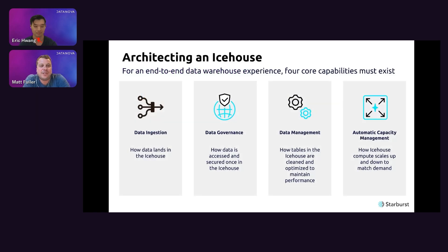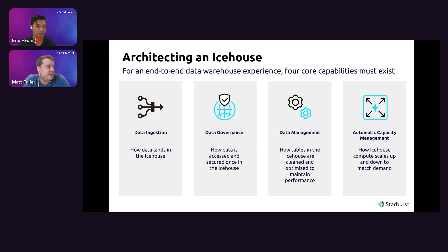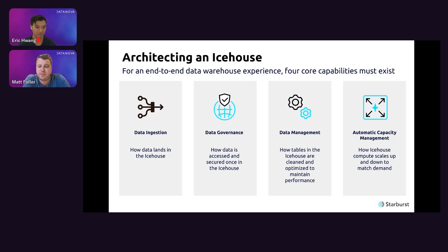To architect an Ice House, there are really four capabilities needed to provide that end-to-end warehouse experience. First is data ingestion — how data lands in the Ice House. Second is data governance — how data is accessed and secured. Third is data management — how tables are cleaned and optimized automatically, similar to data warehouses, unlike legacy lakes where you have to do this manually. Fourth is automatic capacity management — how compute scales up and down to match demand.